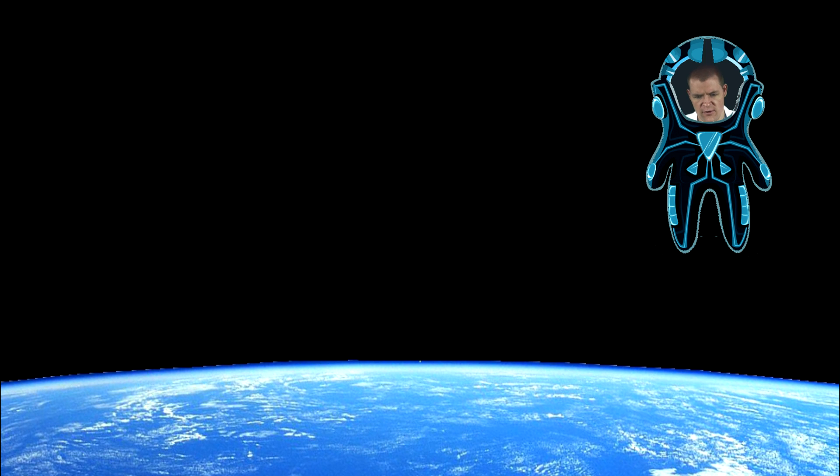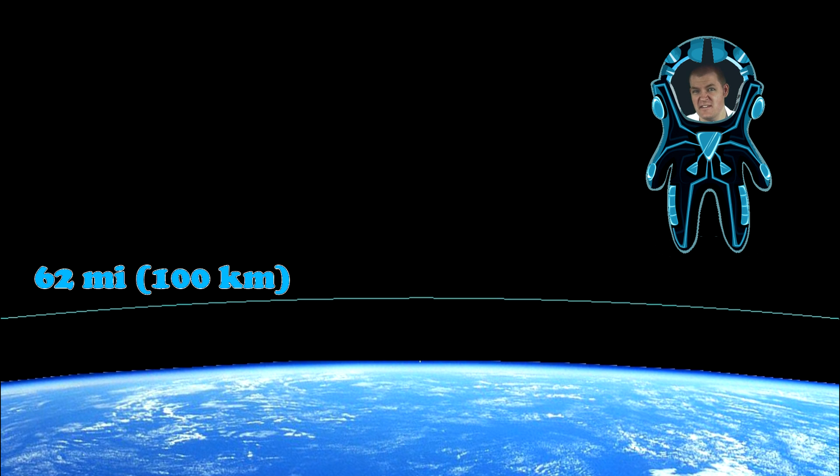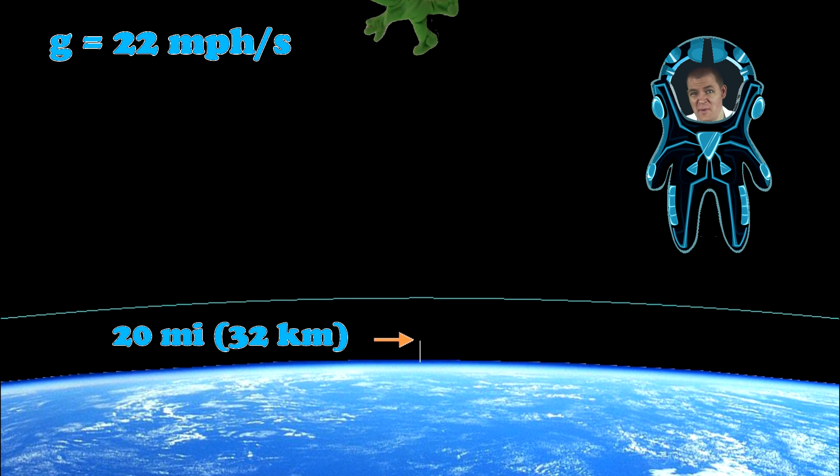Okay, here we are. Space. And there's the Earth down there, just chilling. The defined edge of the atmosphere is right about here, about 62 miles up. Now that 22 miles per hour per second we mentioned earlier, is only the acceleration due to gravity up to about here, which is 20 miles up. Beyond that, it starts to noticeably shrink in value.